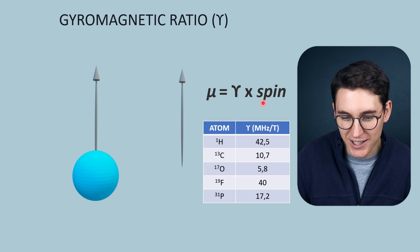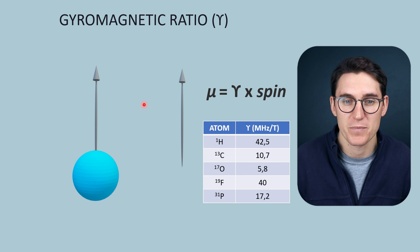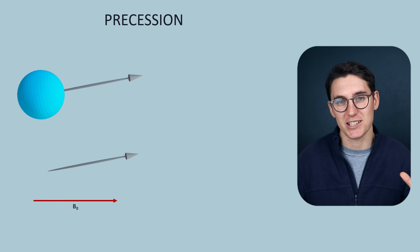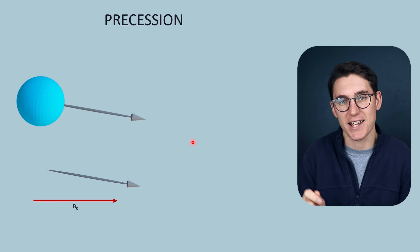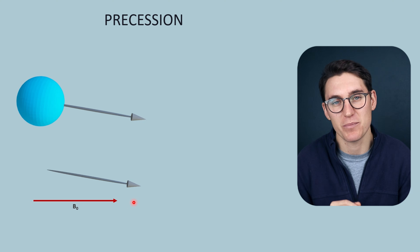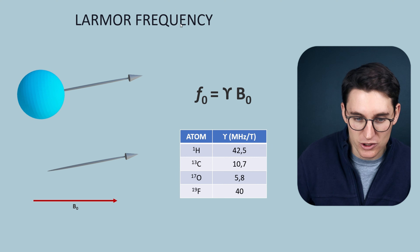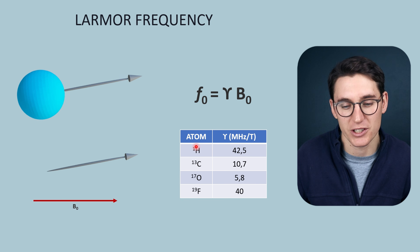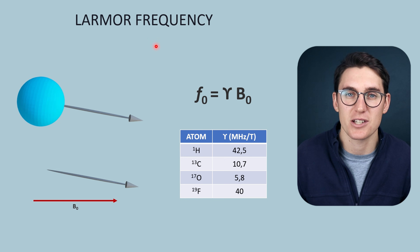The gyromagnetic ratio links a specific atom to that atom's spin and gives us the magnitude of the magnetic moment. Now we've said that when an atom with a non-zero spin is placed in a magnetic field, that atom will align with the magnetic field and it will precess at a certain frequency. The frequency at which that atom will precess is related to the strength of the magnetic field and the type of atom that it is. We can use the gyromagnetic ratio and the magnetic field strength in order to calculate what's known as the Larmor frequency. If we take the gyromagnetic ratio of the atom of interest and multiply it by the strength of the magnetic field, we will get a frequency value that's known as the Larmor frequency.